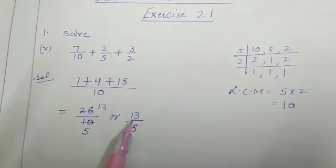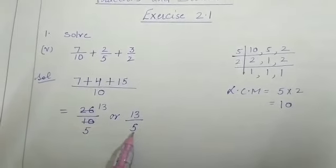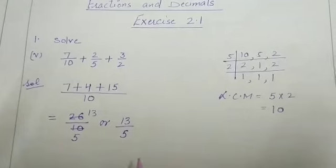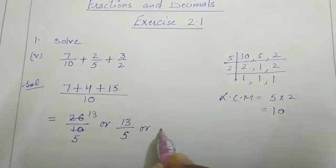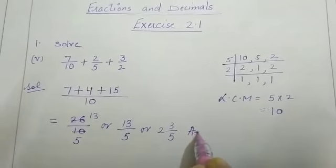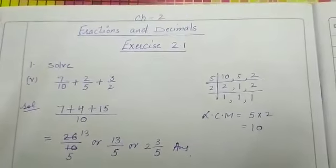Since the numerator is greater than the denominator, we can convert this into a mixed fraction. That will be equal to 2 and 3 by 5. Answer.